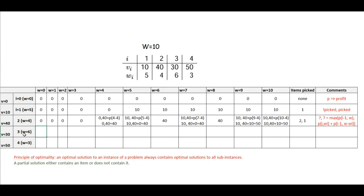Next we take the third item and see what profit we get. As before, we cannot get any profit until we reach the minimum weight, which is 6 here. Applying the principle of optimality at w equal to 6: if we do not pick item 3, our profit is 40. If we pick up this item, the profit is 30 plus profit from the remaining weight, which is 4 minus 6 — a negative value. So the right-hand side is invalid, and our solution remains 40. Similarly, we get the same solution for w equal to 5 and w equal to 6.